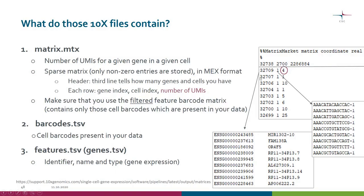After the three header lines come the actual data. In the first column you have the gene index — you go to the features file and check which entry corresponds to that number. The features file contains the gene identifier, the gene name, and the type, such as gene expression. Then you have the index of the cell, which maps to the barcode file, and finally the number of UMIs — how many transcripts were detected for that gene in that cell.